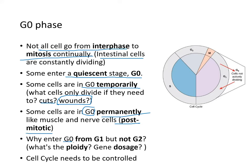Why does a cell enter G0 from G1 but not G2? Because in G2, after the synthesis stage, the cell is 4N or tetraploid. A diploid cell cannot function in a tetraploid environment, so this cell cycle needs to be controlled very carefully.